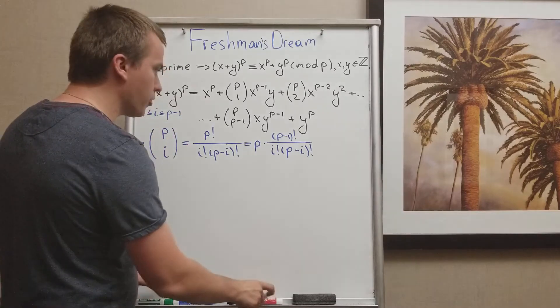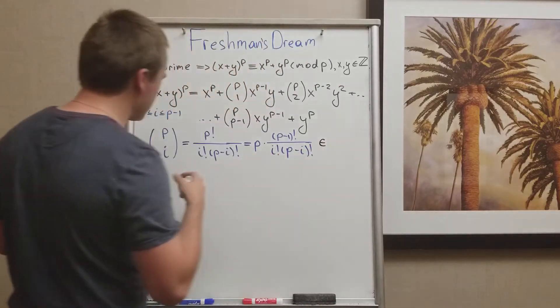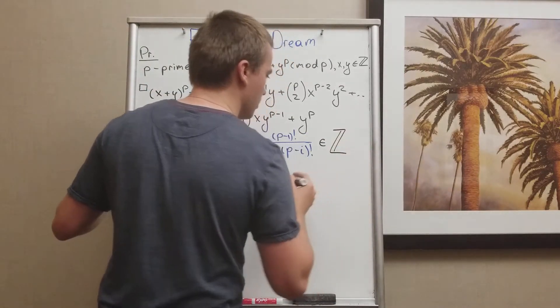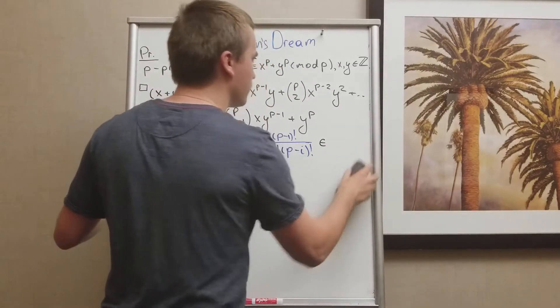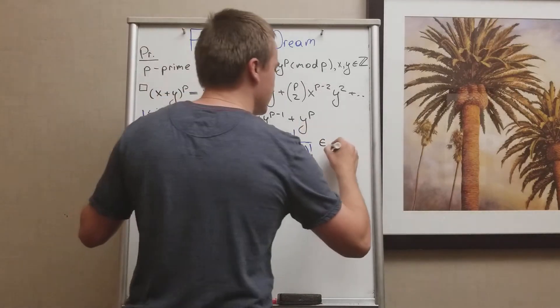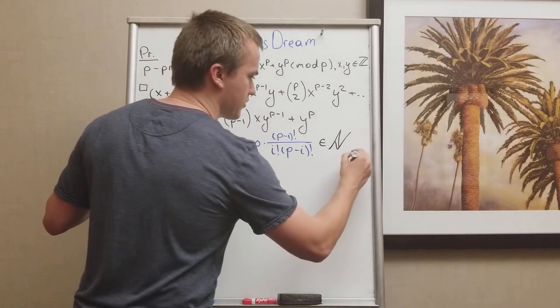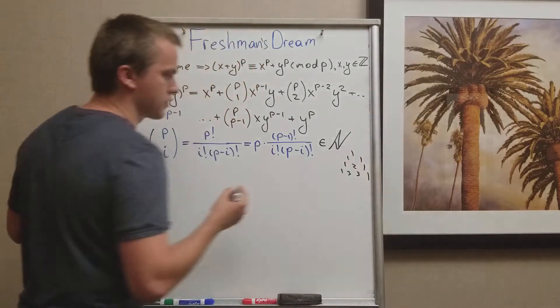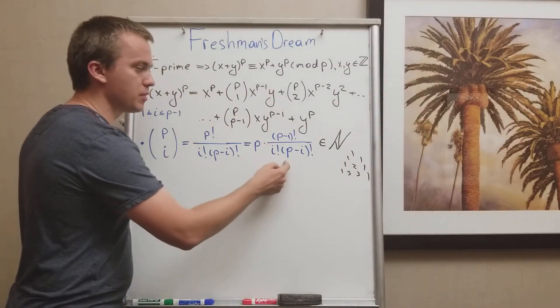And what do we know about binomial coefficients? We know this binomial coefficient, let's kind of generalize, they're integers. Or let's be more specific, let's say they are natural numbers. Because you remember Pascal's triangle: 1 1, 1 2 1, 1 3 3 1, etc. So we know this must be a positive integer.